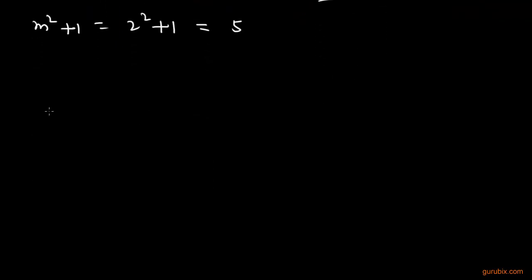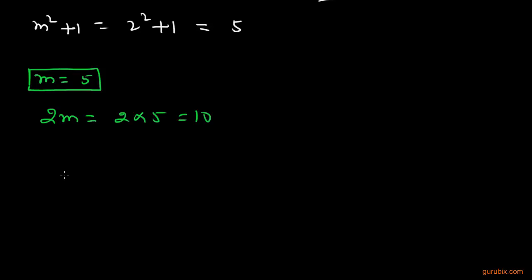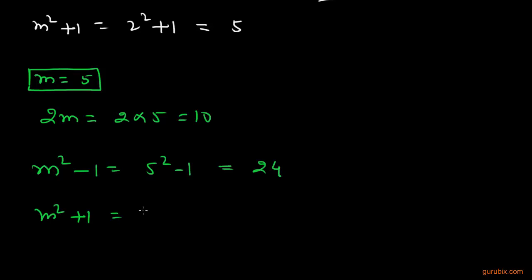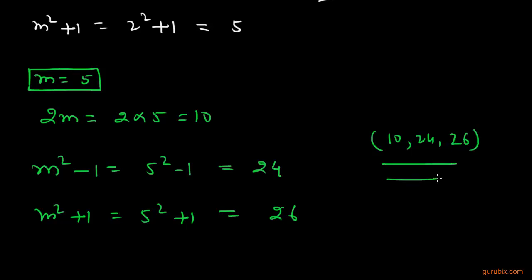Let me give you another example with m equals 5. First, we find 2m, which is 2 into 5, equals 10. Then m square minus 1, which is 5 square minus 1, equals 24. And m square plus 1, which is 5 square plus 1, equals 26. Therefore, 10, 24, 26 is a Pythagorean triplet. This is the method to find a Pythagorean triplet for any natural number m.